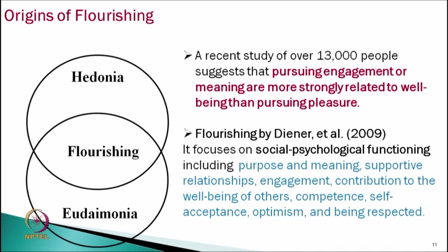Hedonia and eudaimonia share some percentage of variance and are connected with each other. By combining these two models, a new model was generated. In this model, social psychological functioning includes purpose and meaning, supportive relationships, engagement, contribution to well-being of others, competence, self-acceptance, optimism, and being respected. These are the main factors contributing to flourishing.